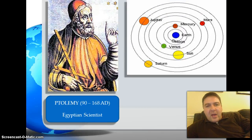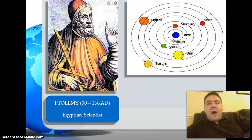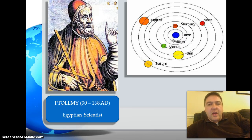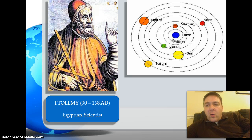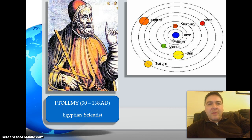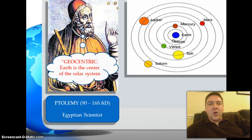A lot of European science was based on earlier civilizations' learning. Here we see an Egyptian astronomer — actually of Greek background but living in Egypt — named Ptolemy. Ptolemy put together a model of the solar system that placed the Earth at the center, known as the geocentric model.